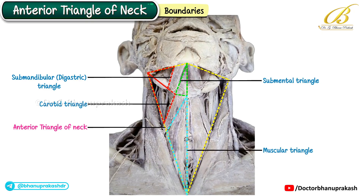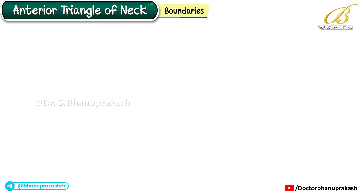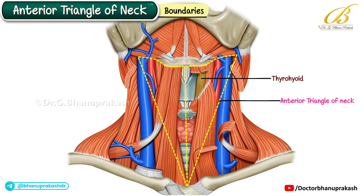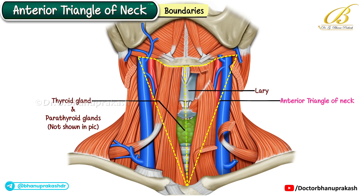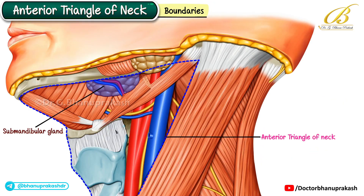Even though the contents of the anterior triangle are not fully visible in this cadaveric image, it's important to review them because of their exam relevance. The muscles include the thyrohyoid, sternothyroid, and sternohyoid. The organs located here are the thyroid gland, parathyroid glands, larynx, trachea, submandibular gland, and the caudal part of the parotid gland.